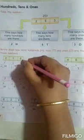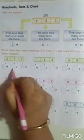This says how many 1s are there. How many? 6. So I will write here 6. So how many 100s are there? 2 hundreds, 1 ten and 6 ones. Similarly, we will write here 5.